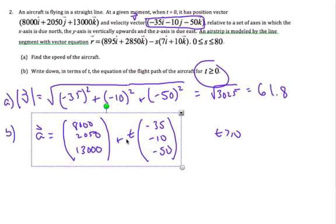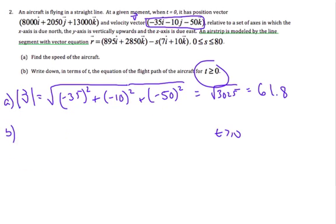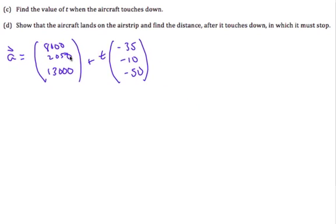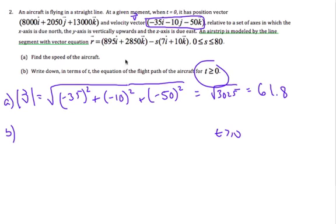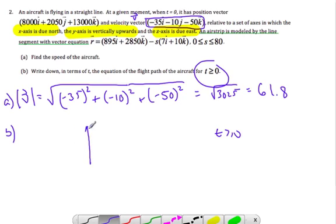Now let's take that to the next part, which is part C. It says find the value of t when the aircraft touches down. Now we have to think about what our graph looks like. The x-axis is due north, the y-axis is vertically upwards, and the z-axis is due east.